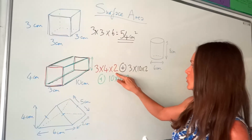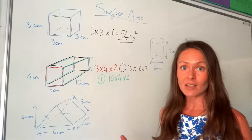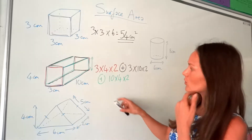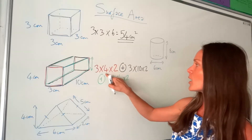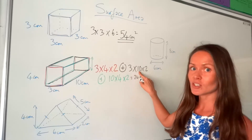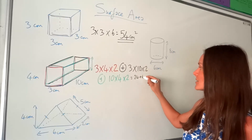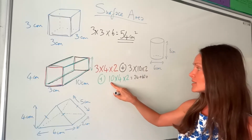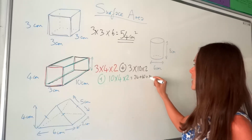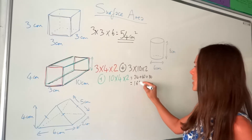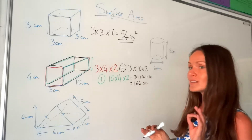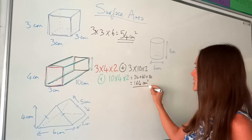So now I've got 6 surfaces. I need to add all those areas together. So we've got 3 times 4, which is 12, and 12 times 2, which is 24. Then we've got 3 times 10, which is 30, and multiply that by 2 to get 60. And lastly we've got 10 times 4, which is 40, times that by 2 to get 80. And then we add them together to get 164. Not forgetting the units for surface area — always squared — so the answer is 164 centimetres squared.